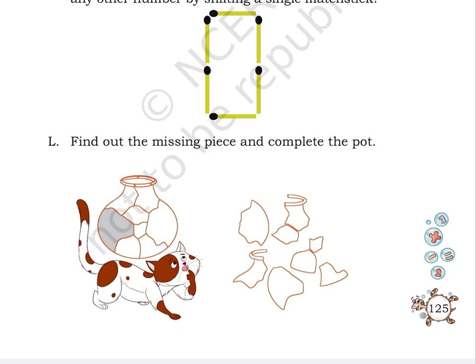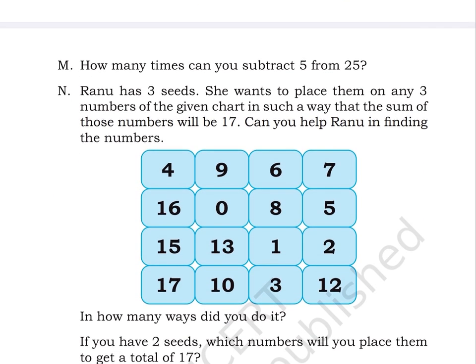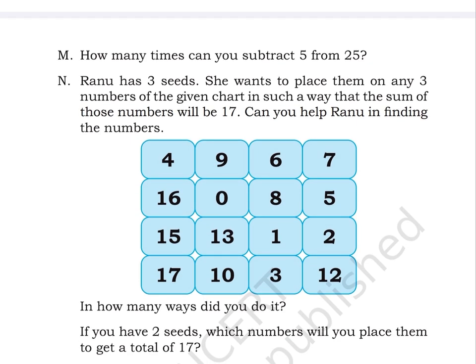Page number 126. Puzzle M: How many times can you subtract 5 from 25? Puzzle N: Ranu has 3 seeds. She wants to put on 3 numbers so that the sum of those numbers can be 17. Can you help Ranu for this?